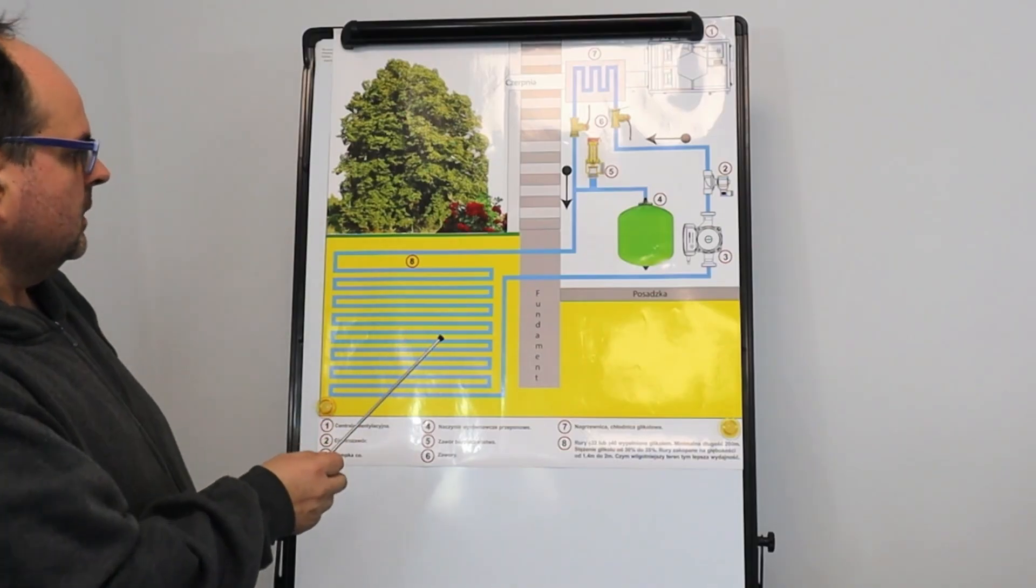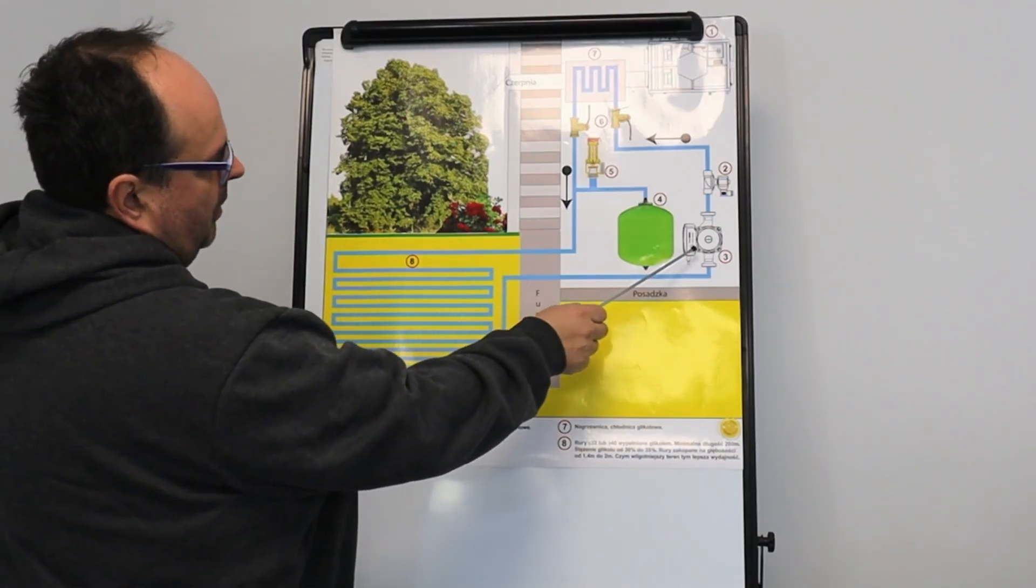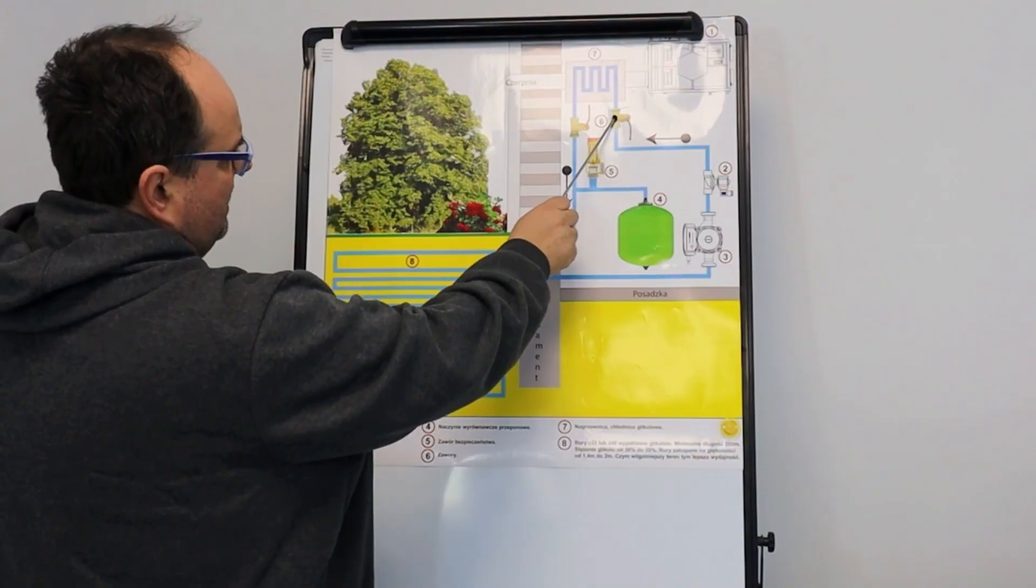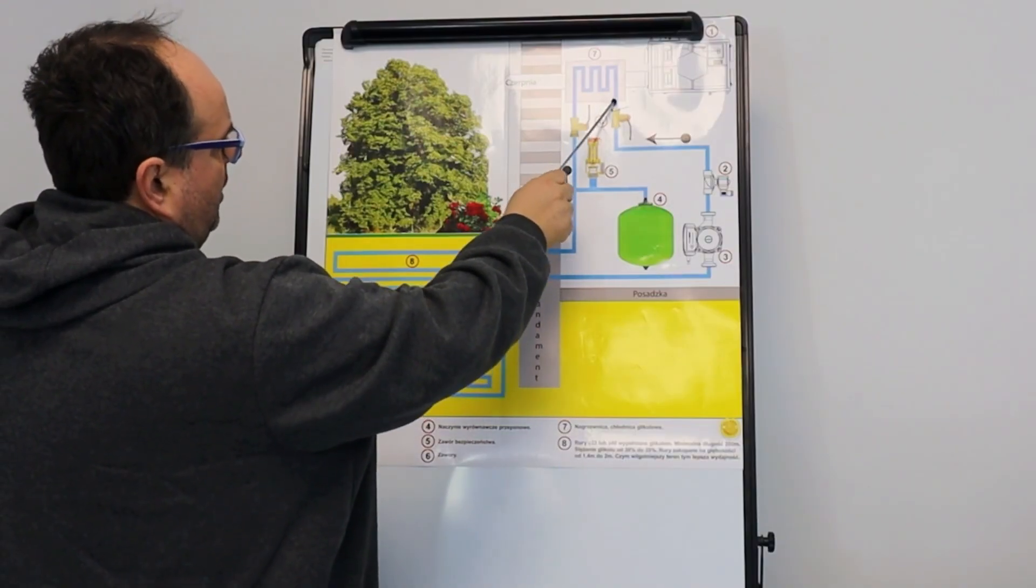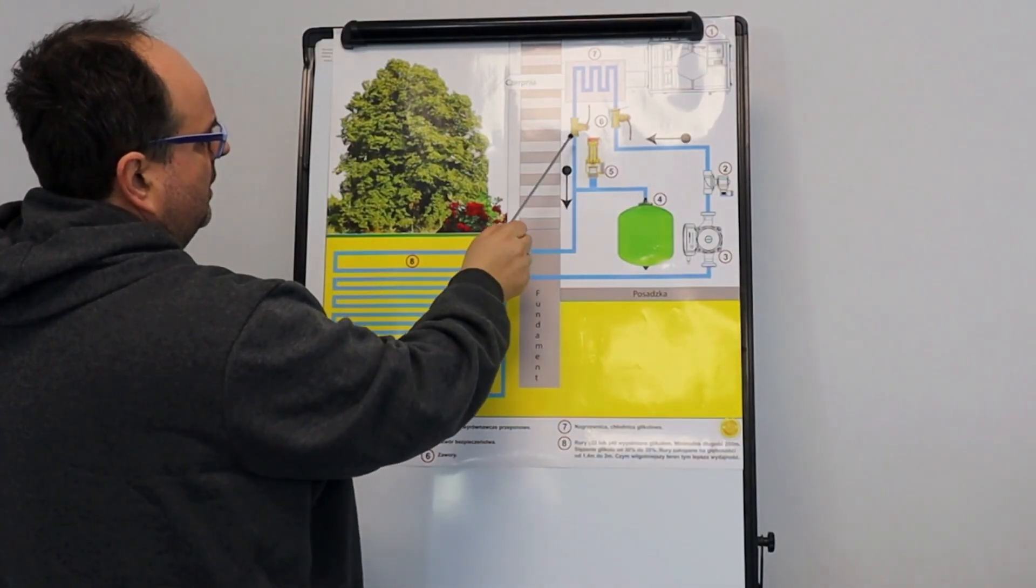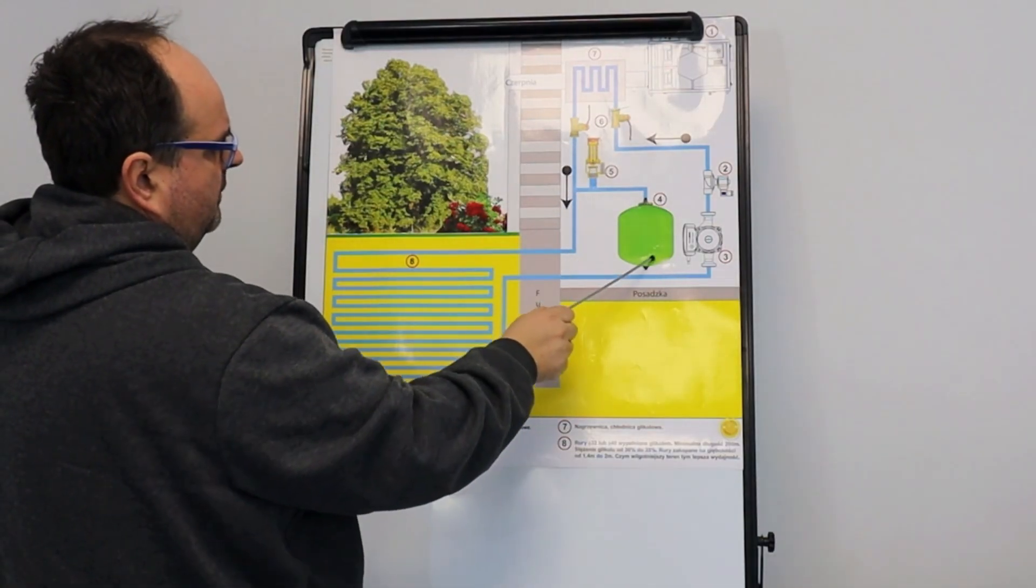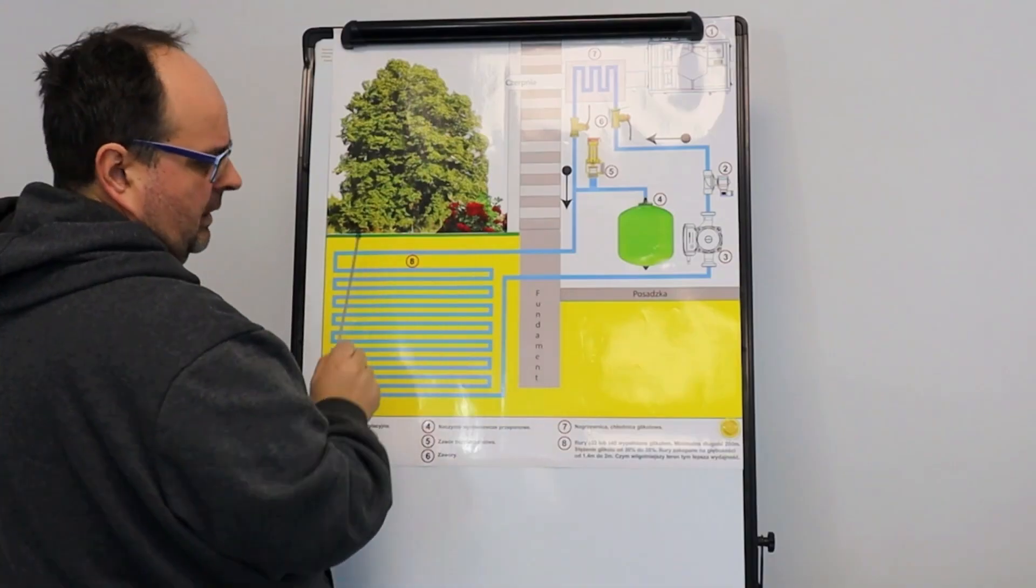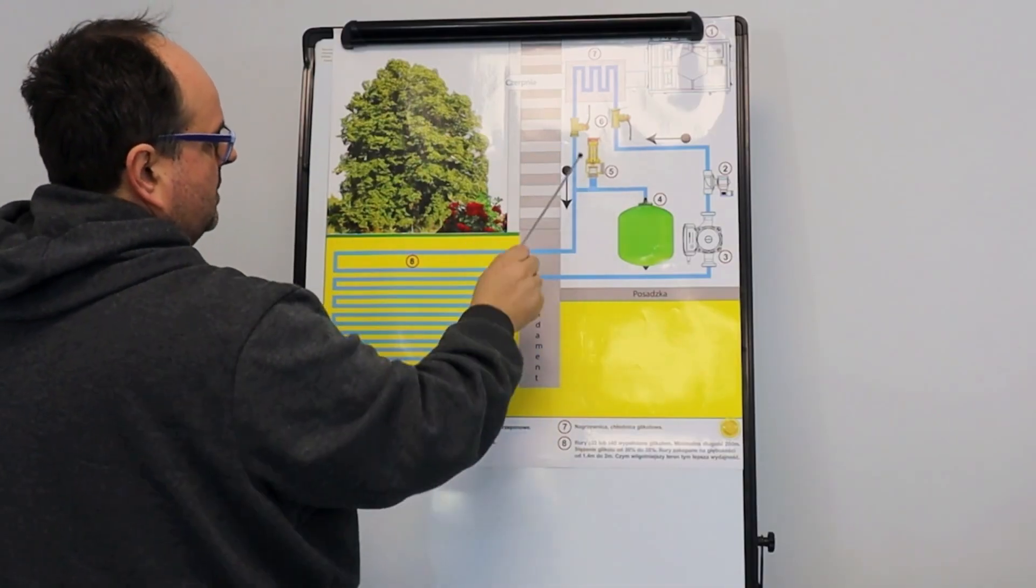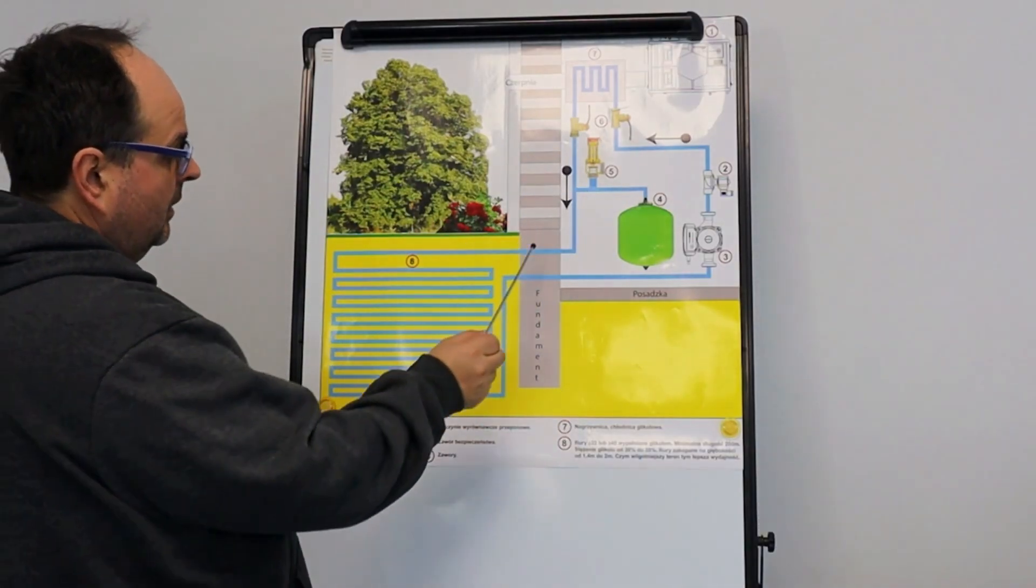We have a simple scheme: pump, solenoid valve, a regular service valve for glycol distribution. The second valve is a safety valve and an expansion vessel. This is our entire system, very simple.